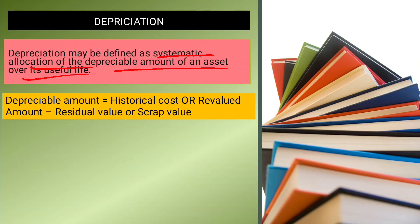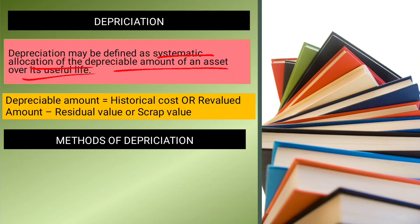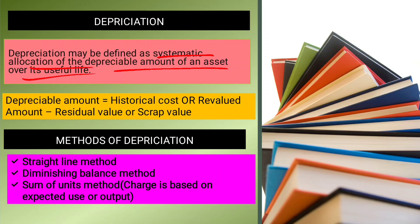The depreciable amount is the historical cost or revalued amount minus the residual value (scrap value). The methods of depreciation are mainly three types: the Straight Line Method, the Diminishing Balance Method, and the Sum of Units Method. These are the concepts of depreciation under AS10.